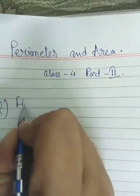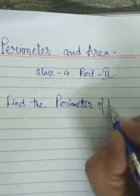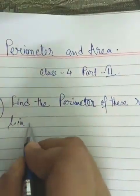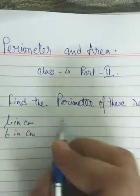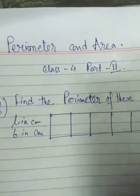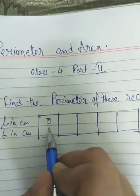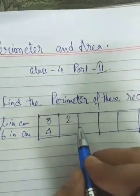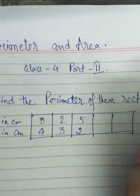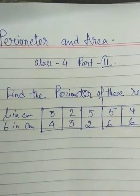The question is: find the perimeter of these rectangles. The length in centimeters and the breadth in centimeters are given. Number 1 is 3 cm length and 4 cm breadth. Number 2 is 2 cm length and 3 cm breadth. Number 3 is 5 cm length and 2 cm breadth. Number 4 is 5 and 6. Number 5 is 4 and 6. So how do we find the perimeter of a rectangle?